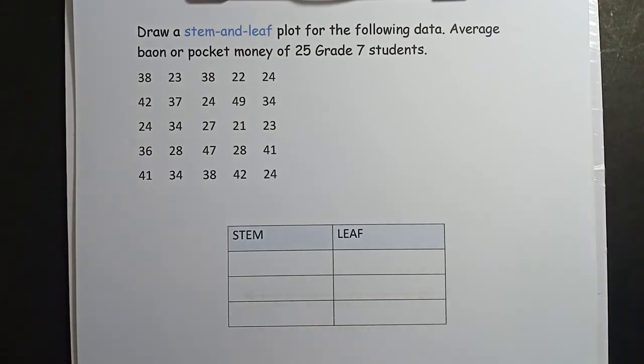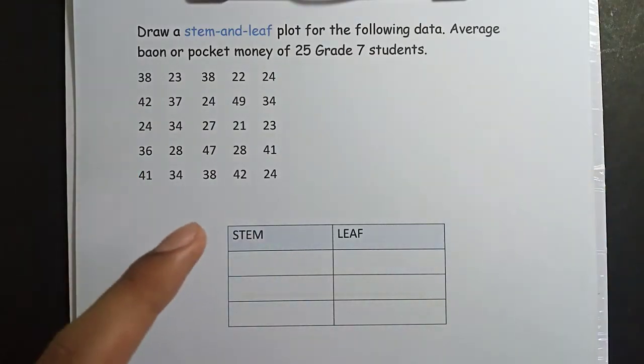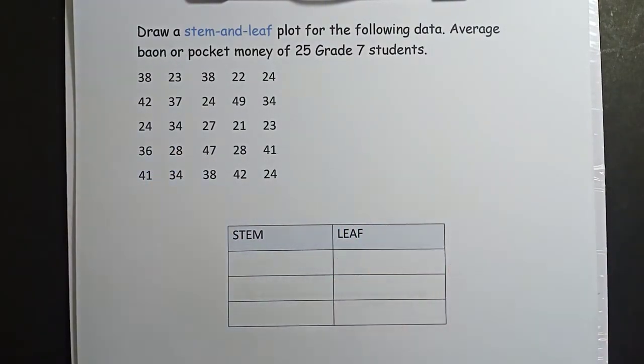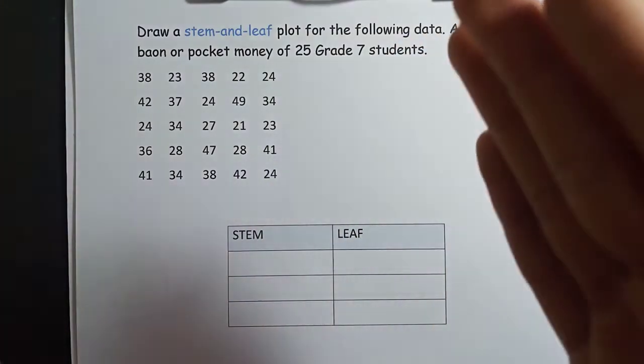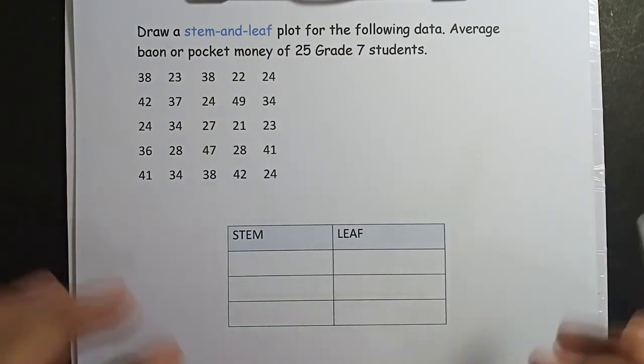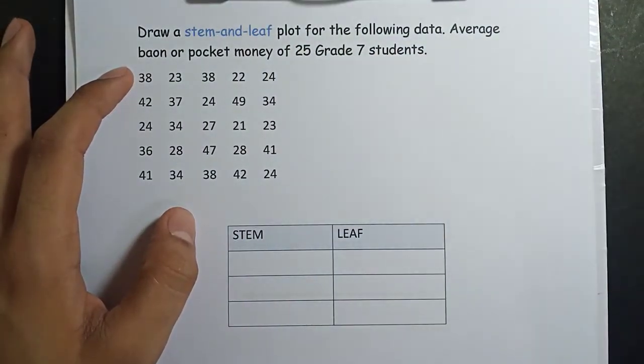Let's start with the stem and leaf. The stem and leaf plot is a method for showing the frequency of occurrences of the values in a set of data. As you can see here, we have two tables with two columns. The first column is for the stem, the second one is for the leaf.